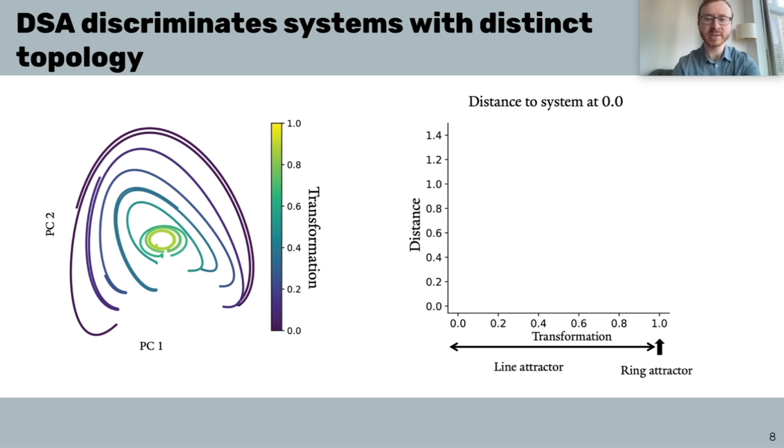Finally, we wanted to demonstrate that DSA is sensitive to topological changes, such as the tearing of a ring. We apply a different transformation here, such that when the transformation parameter is less than 1, the ring attractor is broken and is, in fact, a curved line attractor.